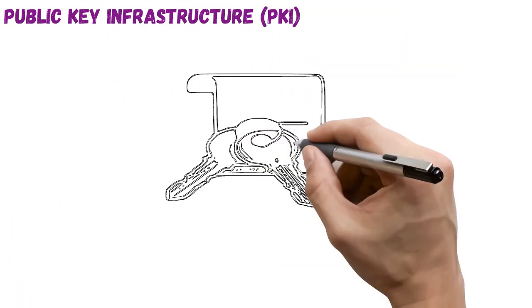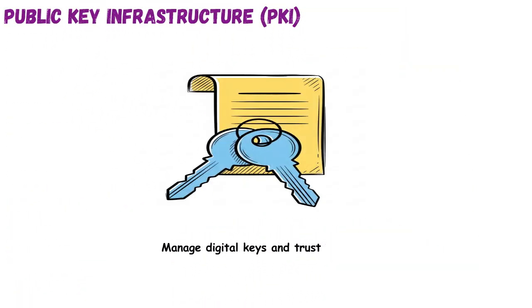Public key infrastructure. PKI is the structured system for managing digital certificates and public-private key pairs securely. Think of it like a notary system — it verifies identities and signs digital documents as trustworthy. PKI is crucial for authentication, secure email, SSL certificates, and VPNs. It consists of certificate authorities, registration authorities, key pairs, and certificate revocation lists. The system binds public keys with verified identities to build trust across the network.